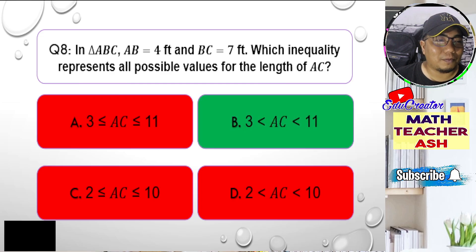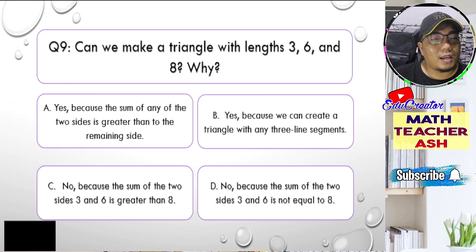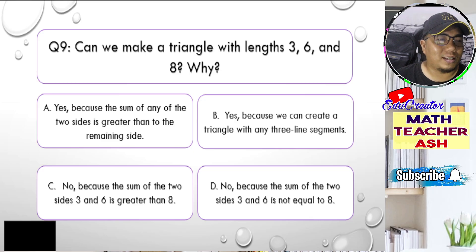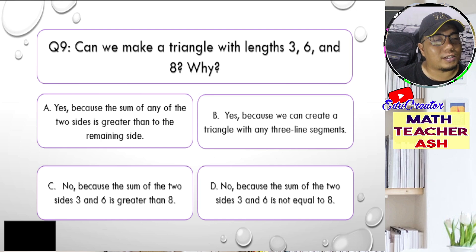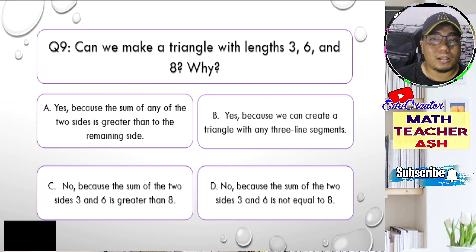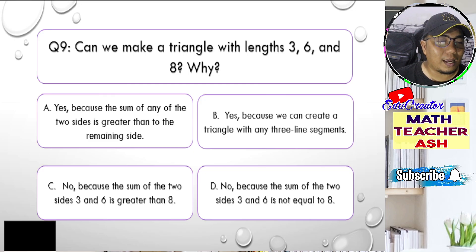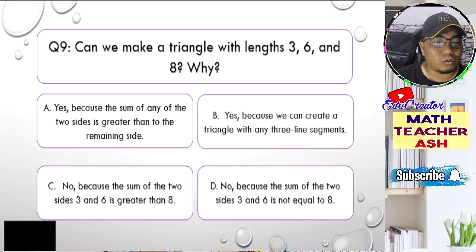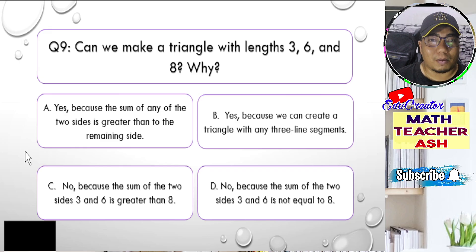Let us go to question number nine. Can we make a triangle with lengths 3, 6, and 8? Is it A, yes because the sum of any two sides is greater than the remaining side; B, yes because we can create a triangle with any three line segments; C, no because the sum of the two sides 3 and 6 is greater than 8; or D, no because the sum of the two sides 3 and 6 is not equal to 8? I'll give you five seconds to think about your answer.